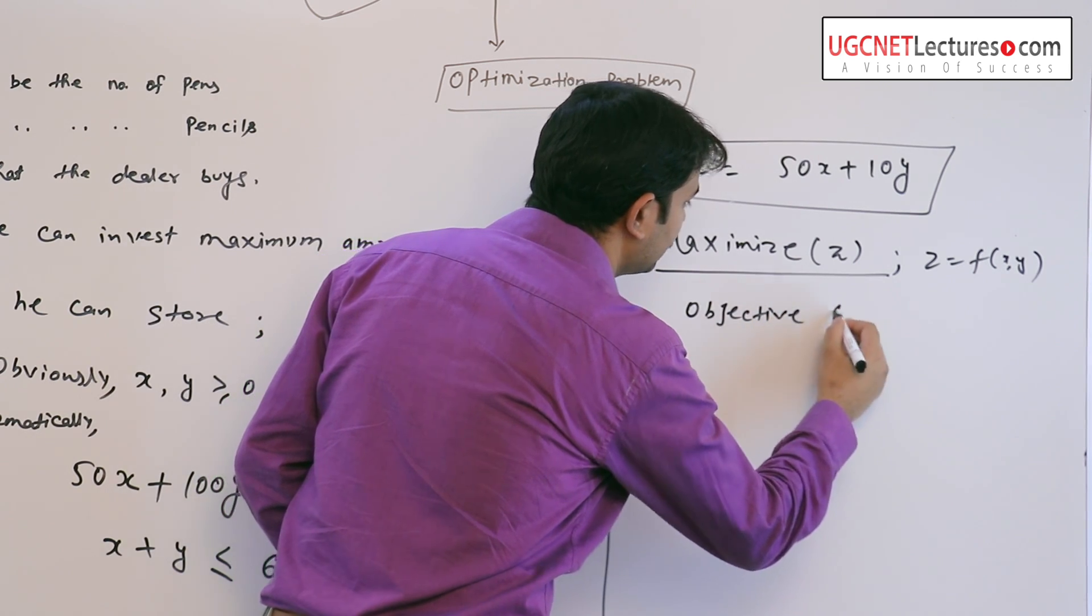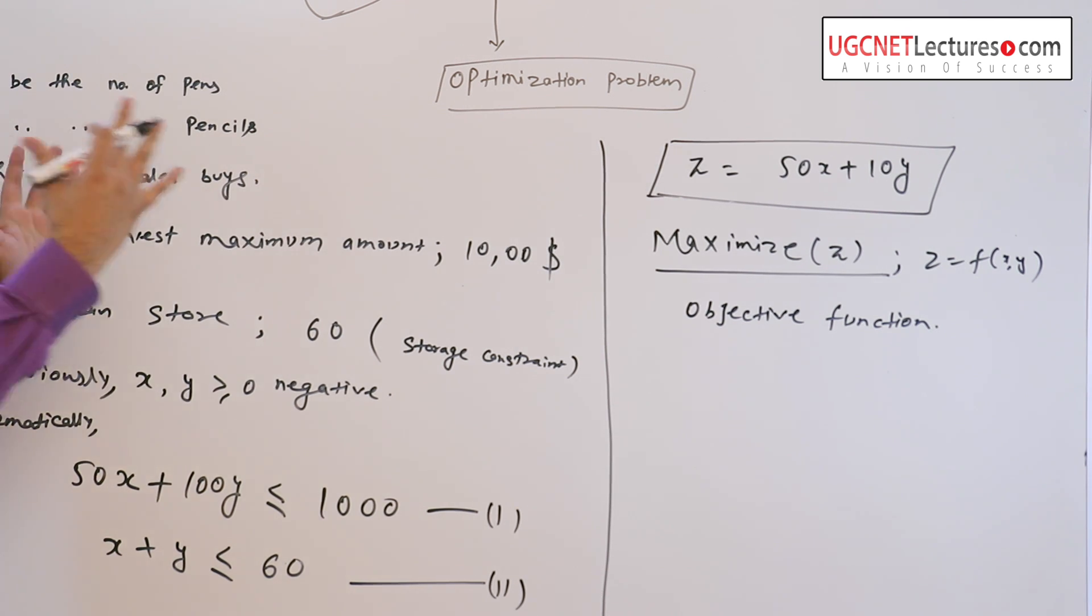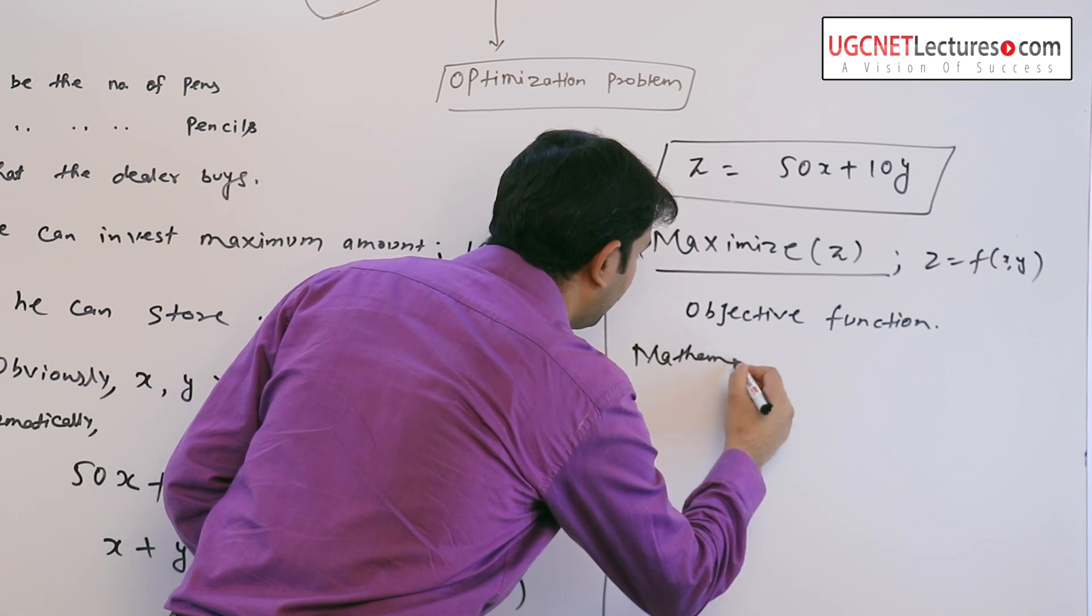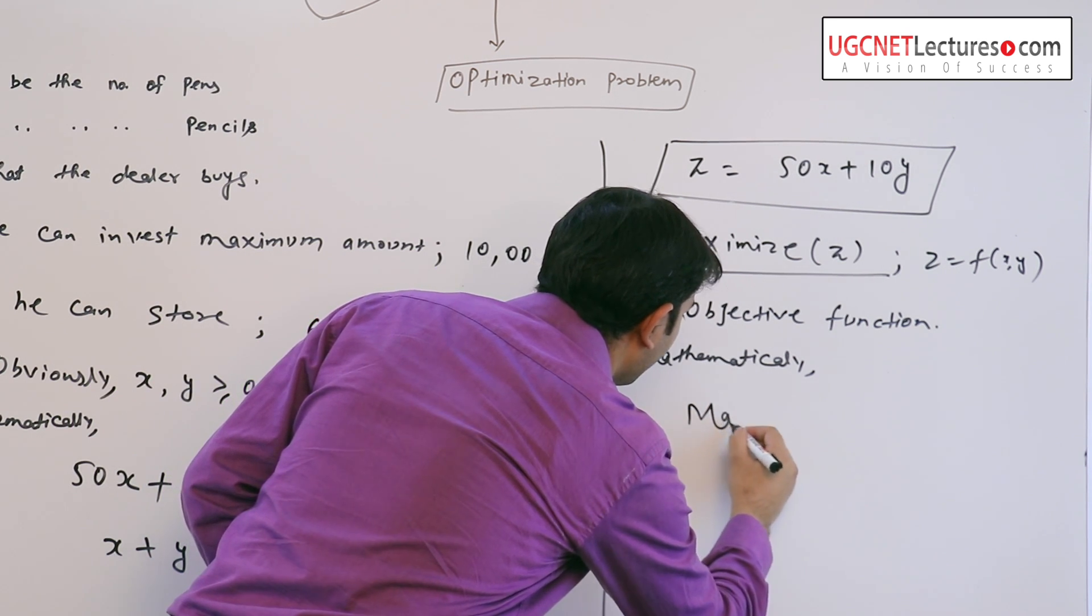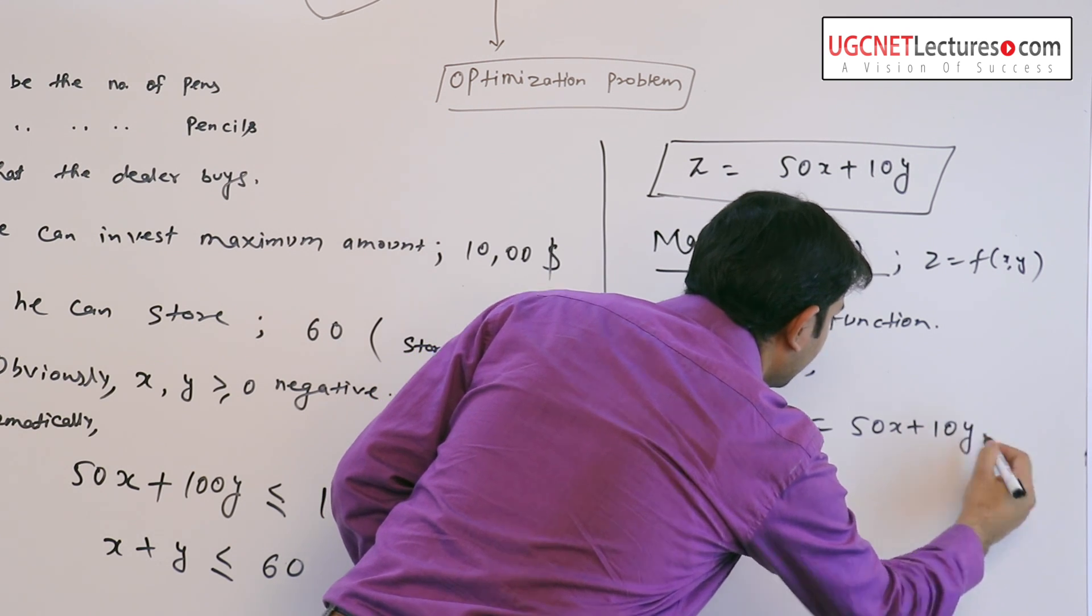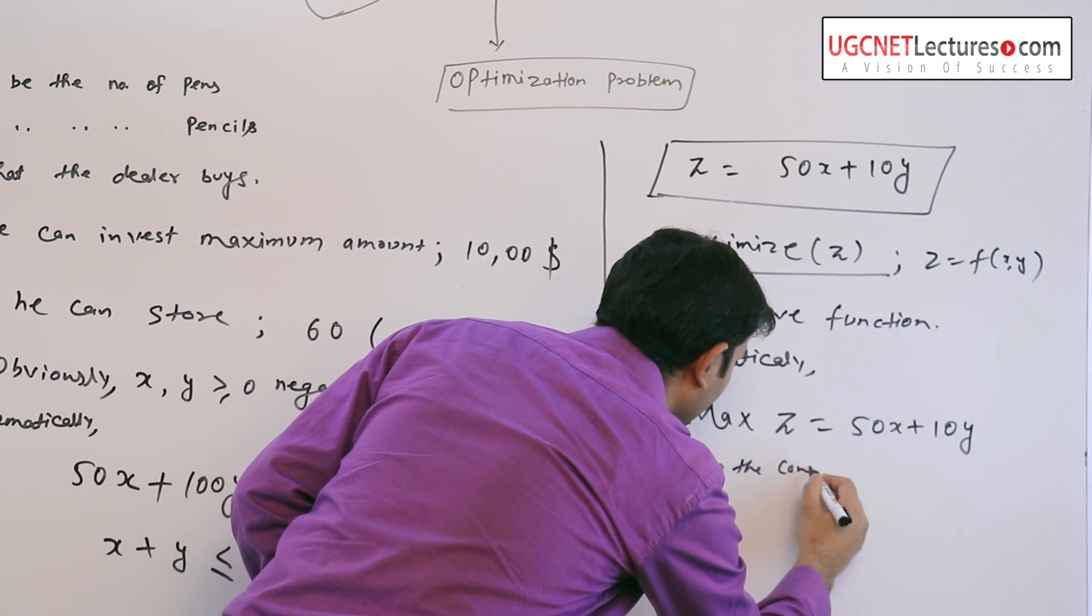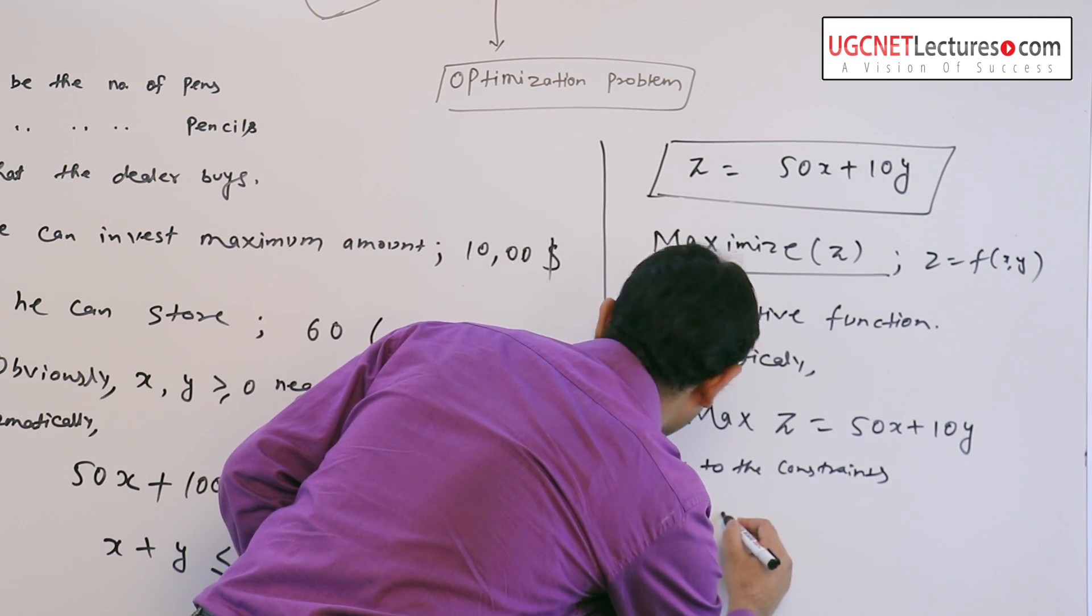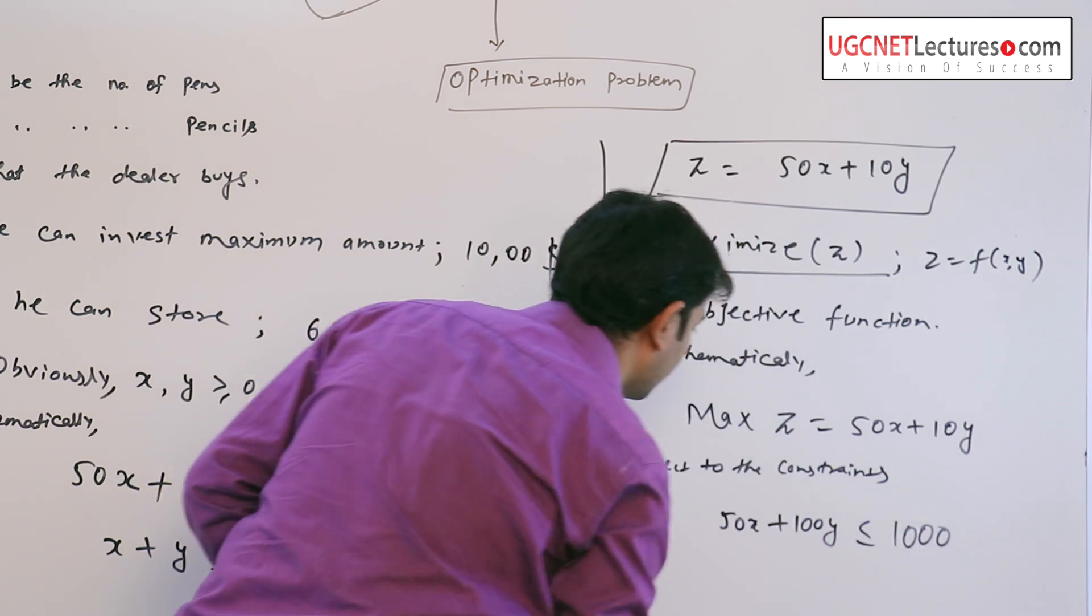So if we rewrite all the things mathematically, the problem reduces as maximization z, we can say that subject to the constraints. The first one is 50x plus 100y less than or equal to 1000.